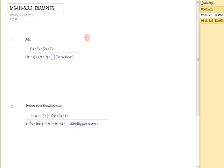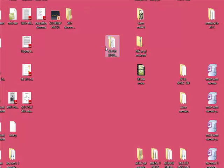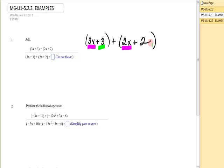Number one, I have 3x + 3 + 2x + 2. Because these are both preceded by implied positive 1s, I can ignore the parentheses. In my mind, I see that these are like terms. So what does that give me? 3x + 2x is 5x, 3 + 2 is 5. These are not like terms, so I'm done.